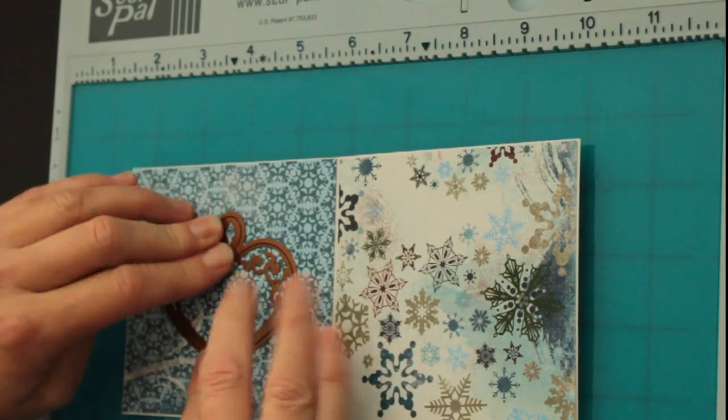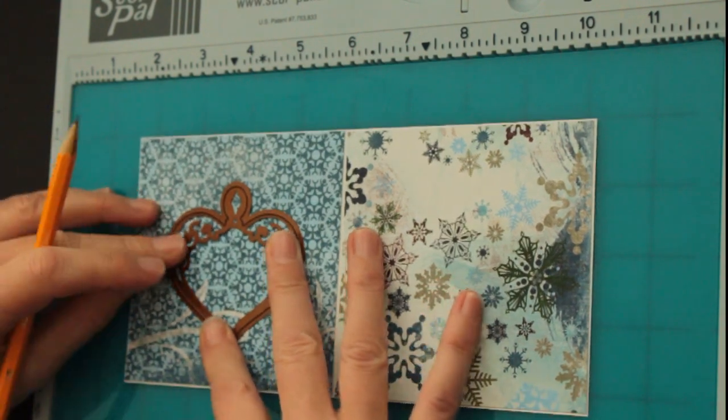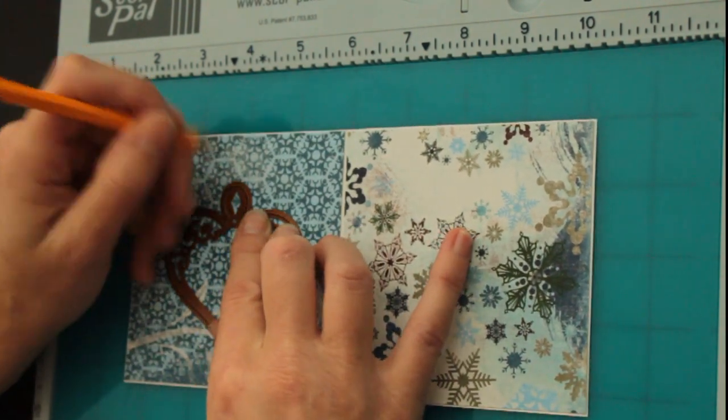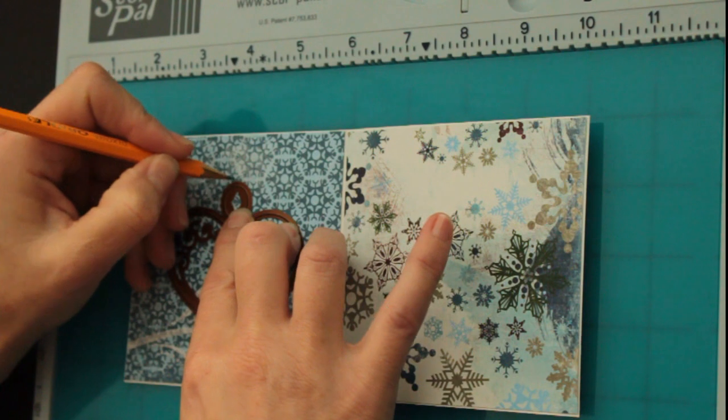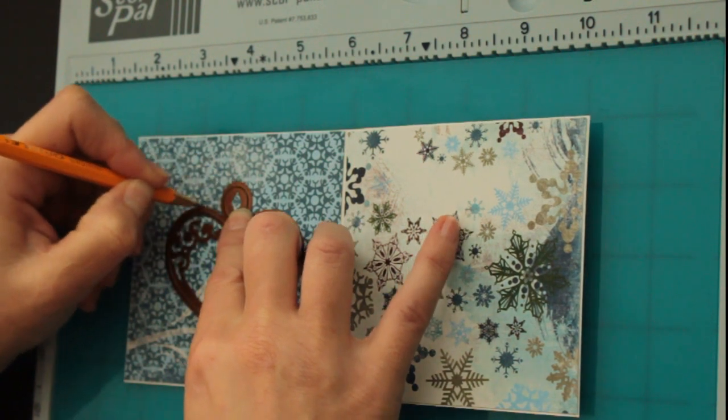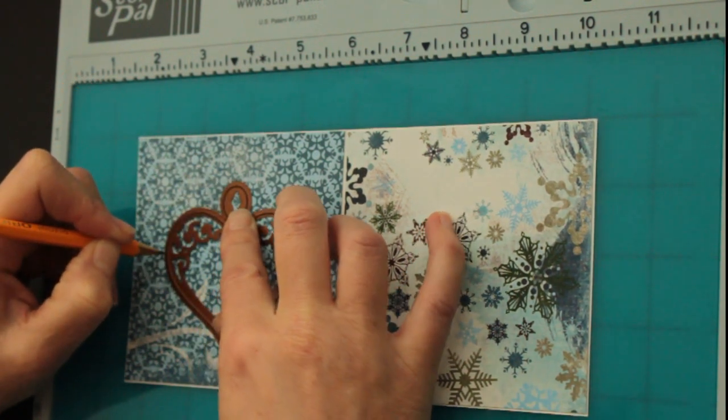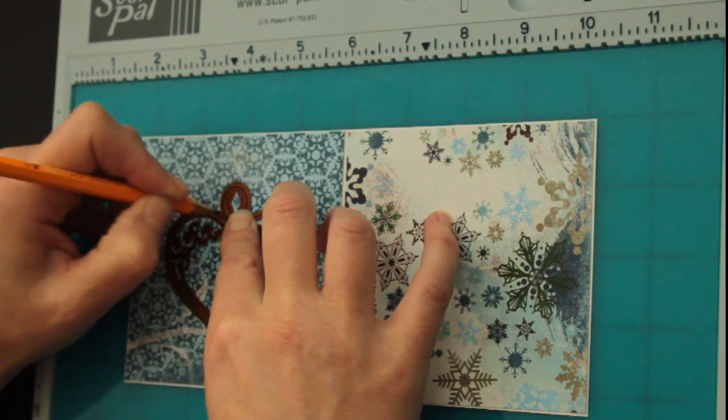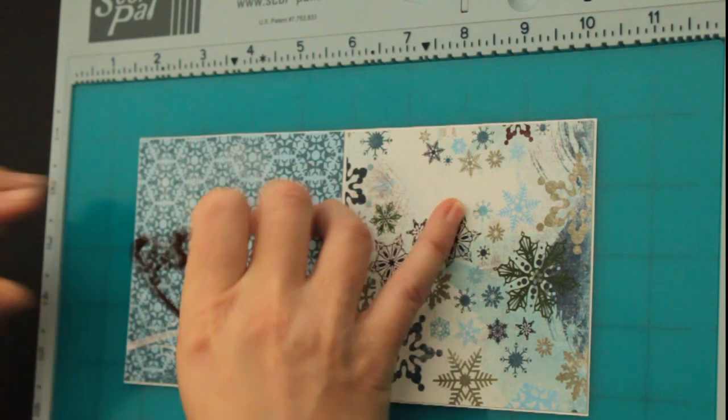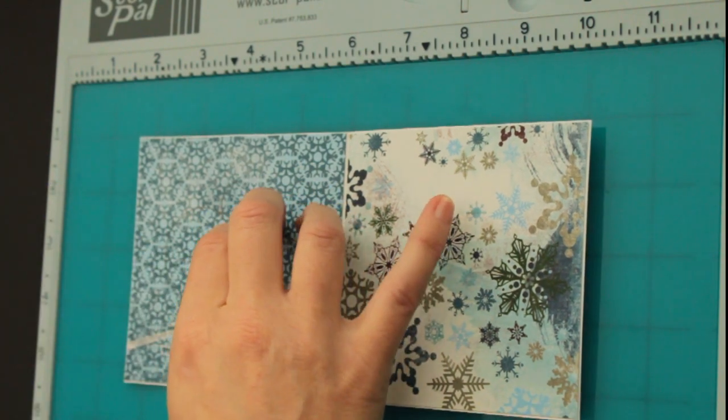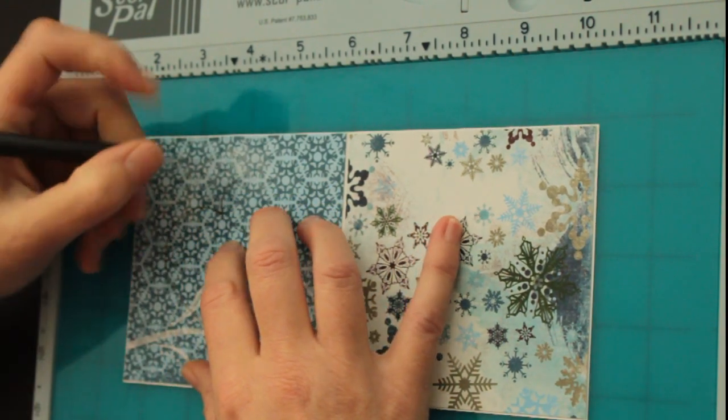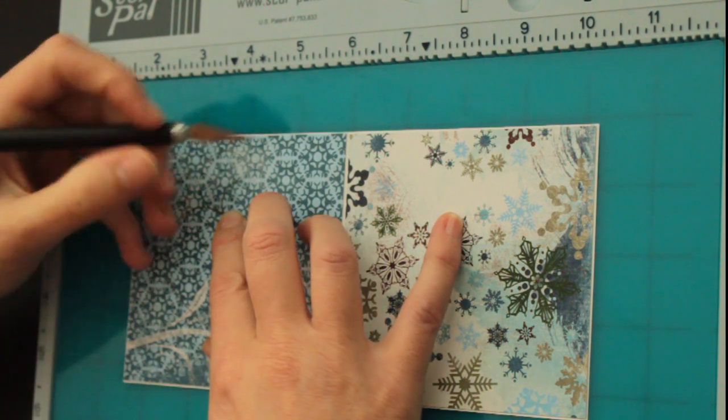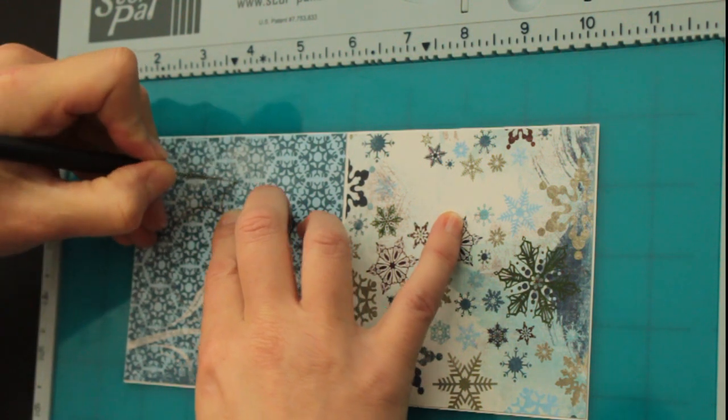Now you lay your shape down where you want it, halfway on one side, half on the other, and you trace it on the outer side of the outer panel of the card. And then you'll have to cut that, and I'm using a hobby knife for that, an exacto knife.